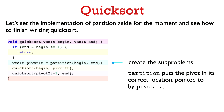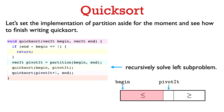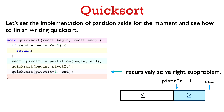The partition function creates the sub-problems: everything to the left of pivotit is at most the pivot, and everything to the right is at least the pivot. It then remains to sort the elements from begin up to but not including pivotit, and from pivotit-plus-one up to end, which we do by recursively calling QuickSort on those two intervals.